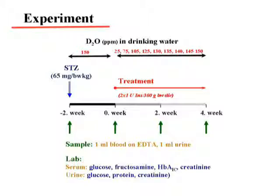Now let's see if this effect is dose-dependent, because there should be a dose-dependency if there is some correlation to a mechanism. We also want to understand the underlying mechanism. We repeated a very similar setup, except we used different groups with different doses of deuterium, ranging from 25 to 150 ppm in increments of 5 ppm — a very precise setup.